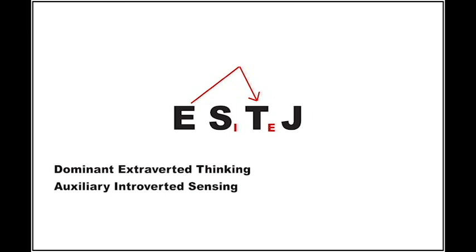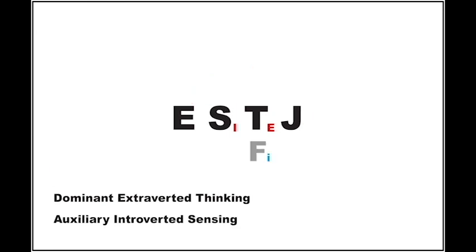Step 4: there are two remaining functions to decode. If the thinking function is dominant and gets the most amount of energy, then the least amount of energy must go to the opposite function, feeling. This is the inferior function. The orientation of the inferior is also opposite to the dominant function, and so is introverted.